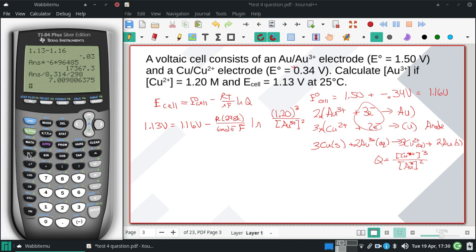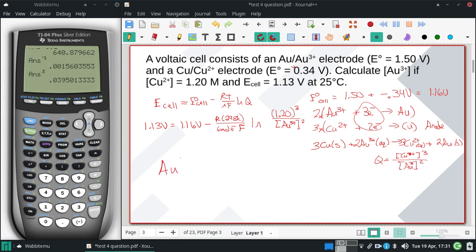So I'm going to get the inverse natural log of this. And now I will divide by 1.20 cubed. That should be equal to 1 over the gold squared. So I'm going to inverse this, which should be equal to the gold squared, and then I'll get the square root of that.